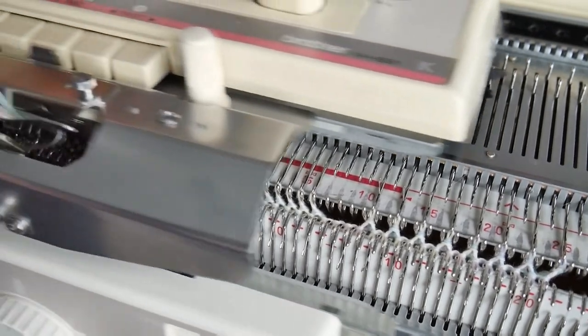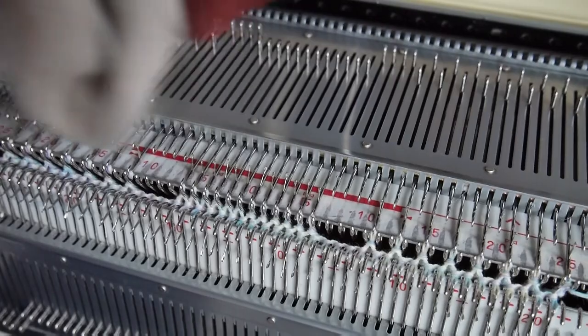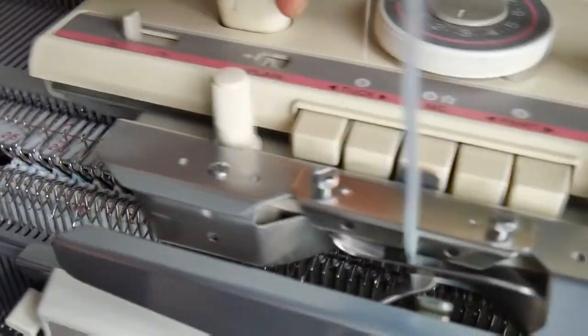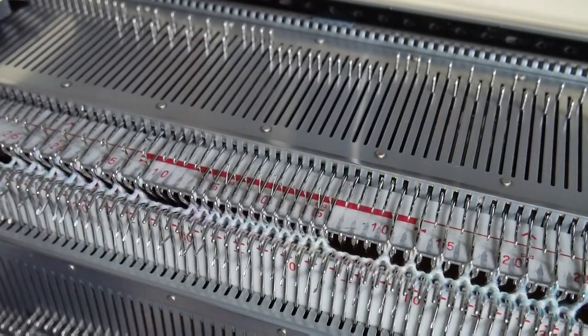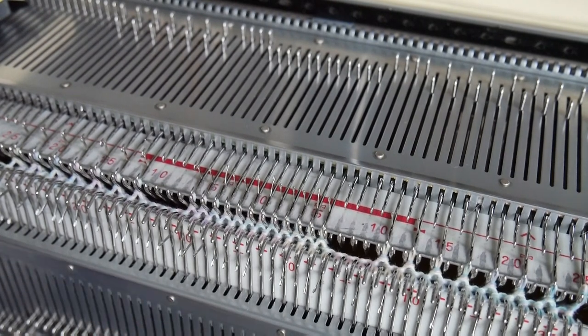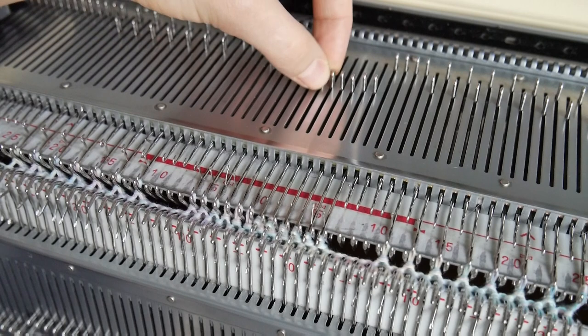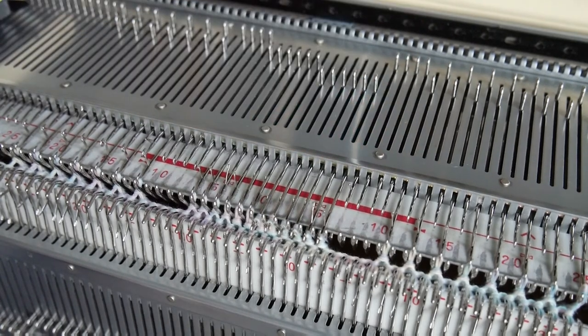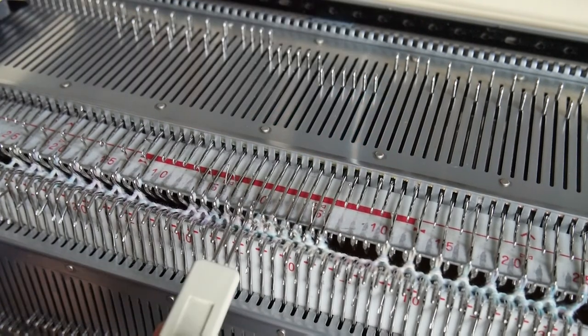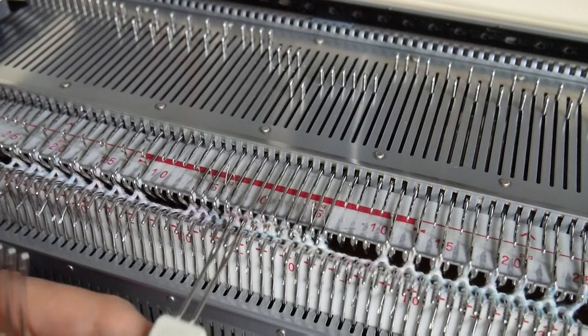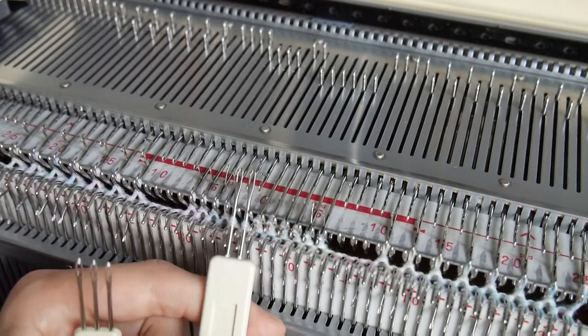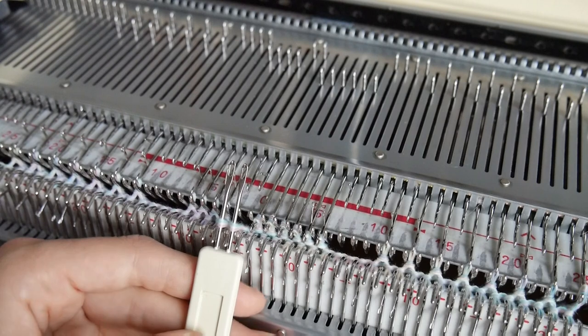Knit 2 rows. Now you have 12 stitches next to each other. Count from right to left 6 stitches and using a 2 prong transfer tool pick up the 7th and the 8th stitch. Now transfer the 6 stitches you counted 1 stitch to the left.